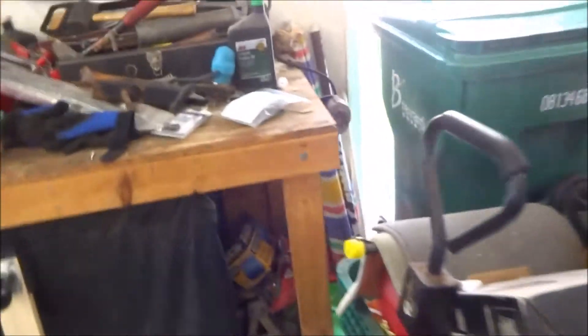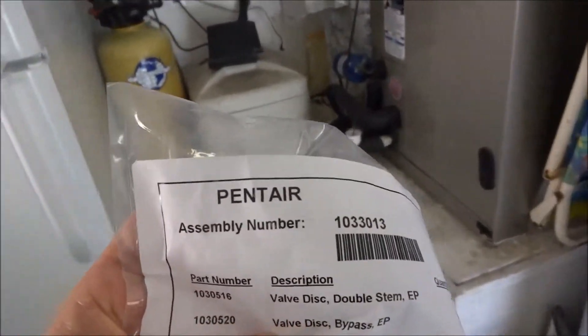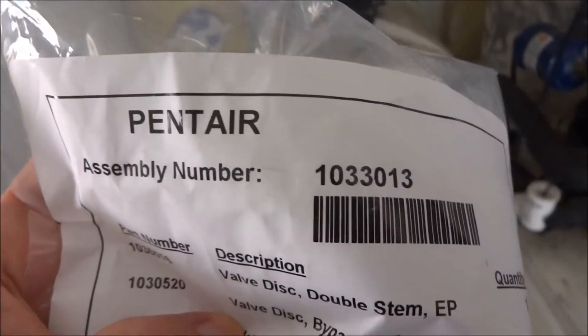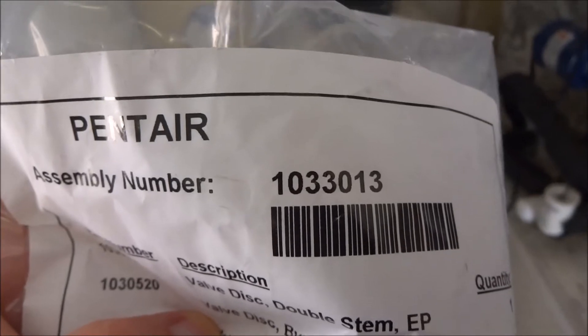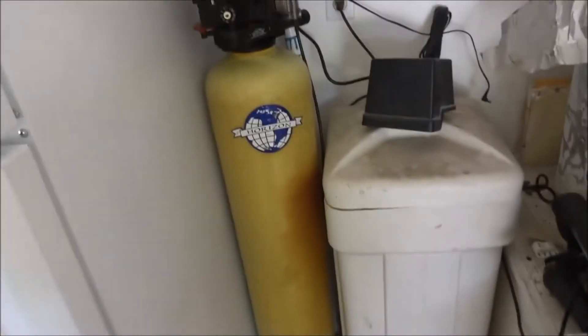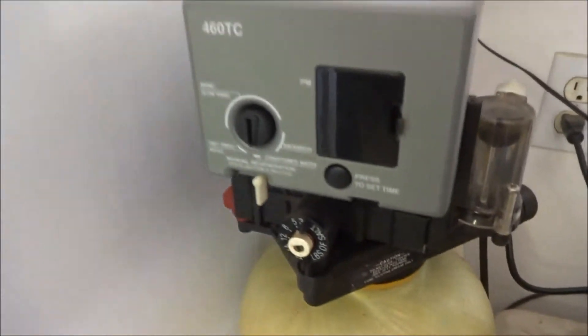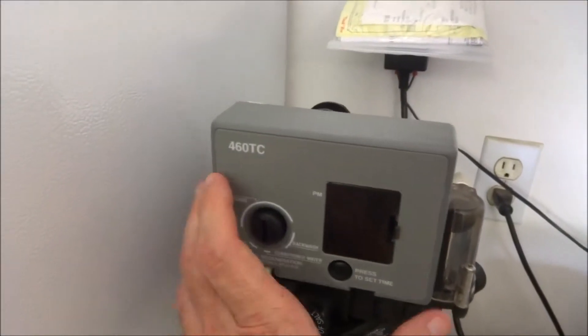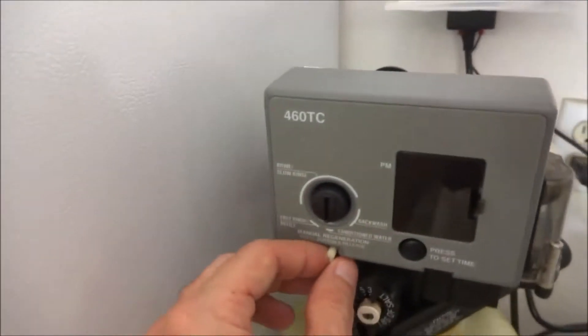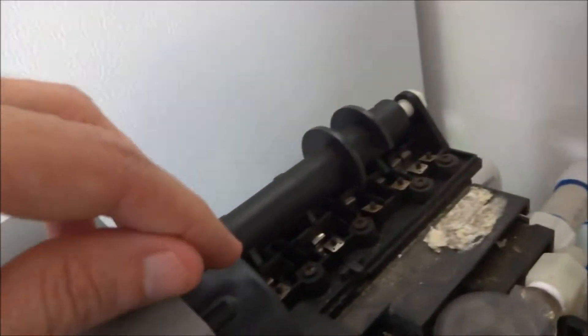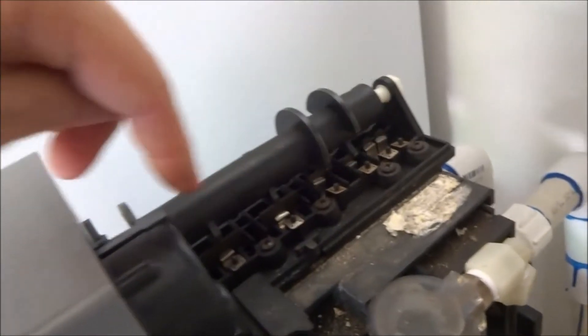The part number is the Pentair assembly number 1033013. What I plan on doing is removing this timer by pulling this and then pulling it straight up. And then you've got to remove these screws in here.